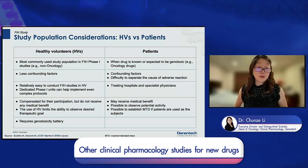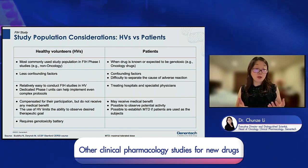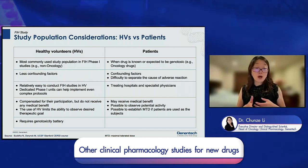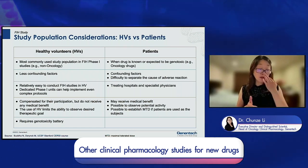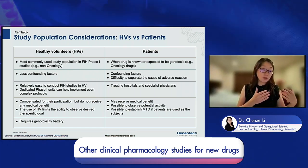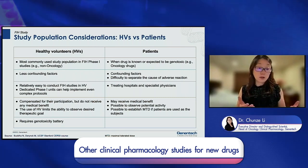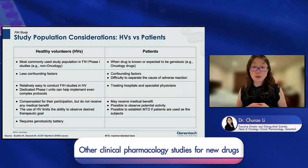For healthy volunteers, the first-in-human study is generally much easier to conduct. We have dedicated clinical phase one units to help implement even very complex protocols — for example, clean pharmacology studies for bioavailability, etc. Clinical study units are very sophisticated in executing these complex protocols.